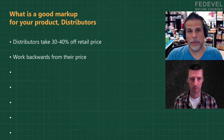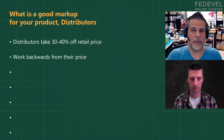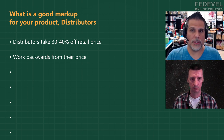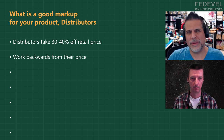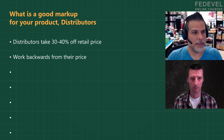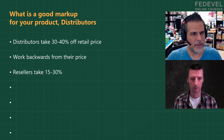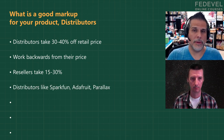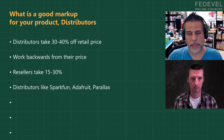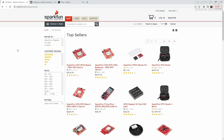A lot of people don't go through resellers — they'll just sell it themselves, build a website, and try to drive traffic. Or use Amazon, which takes smaller margins, about 15 to 20% last time I checked, though it varies. But places like SparkFun, Adafruit, or Parallax — popular online websites that distribute embedded products — are going to want 30 to 40% margin.